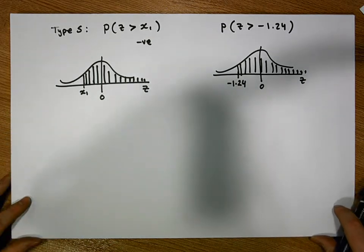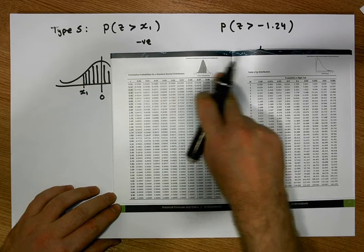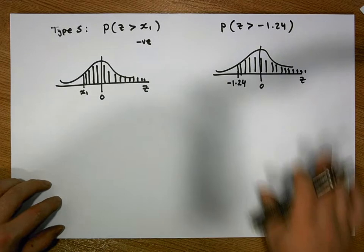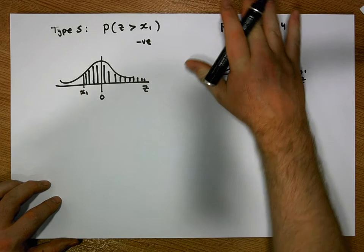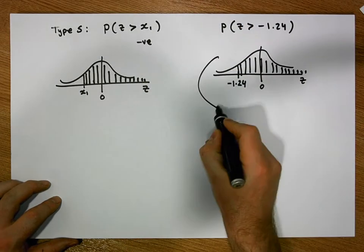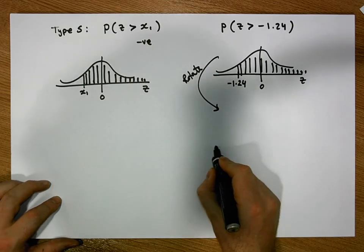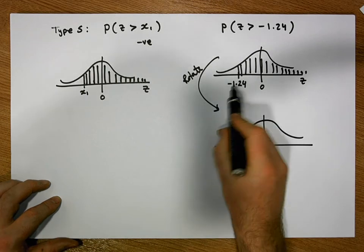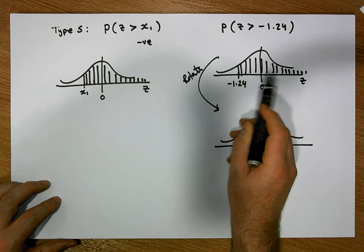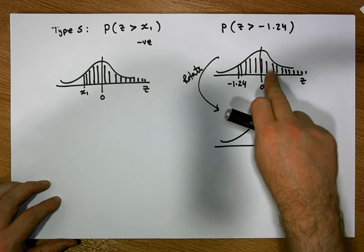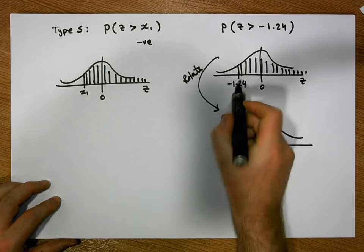We have the same problem as before: our tables only allow us to look up z-scores that are positive. But we know one trick we can apply, due to one of the characteristics of the standard normal curve — it is symmetrical around 0 — so we can always flip this curve over. When we rotate the curve, it's still centred on 0, but minus 1.24 is 1.24 units to the left-hand side of 0, so when we flip it over, it becomes 1.24 units to the right-hand side. Negative 1.24 maps to positive 1.24.